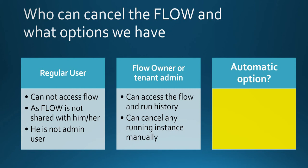The flow admin, flow owner, or tenant admin can do it manually — they go to the flow, go to the run history, look for the flow instance running for that particular record, and cancel it manually. But would it be possible to automate it? Can we automate cancelling the running flow instances whenever the user changes the status to cancel? Yes, that's what we'll be looking at now.